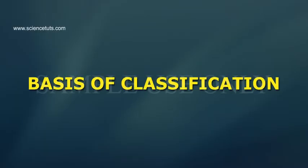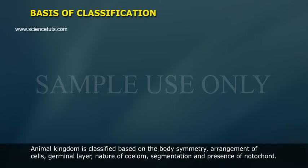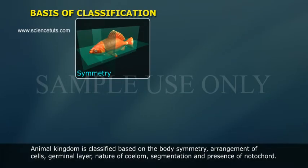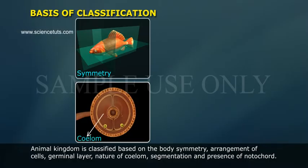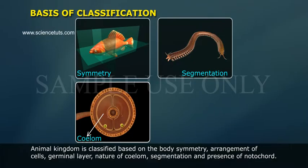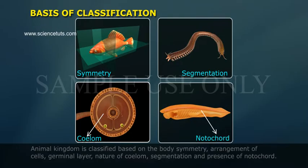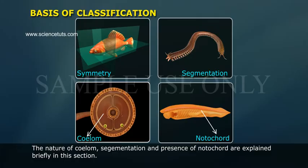The animal kingdom is classified based on body symmetry, arrangement of cells, germinal layer, nature of coelom, segmentation, and presence of notochord. The nature of coelom, segmentation, and presence of notochord are explained briefly in this section.